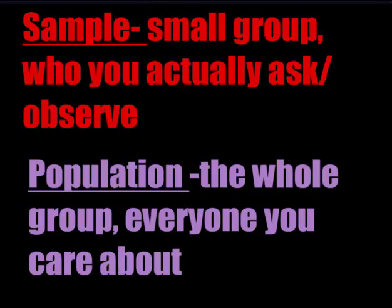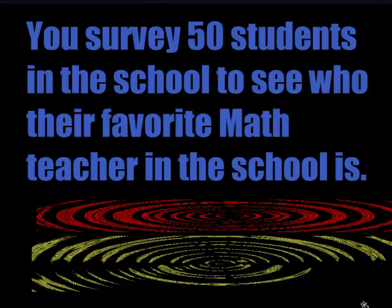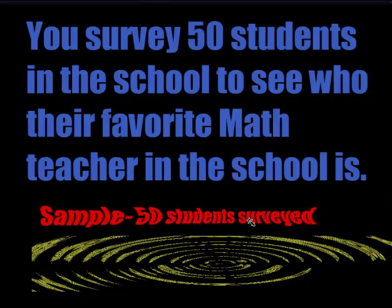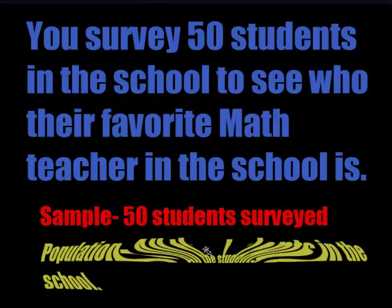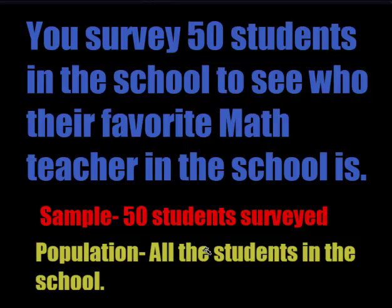In this next example, if you survey 50 students in the school to see who their favorite math teacher is, who would be the sample? The sample is who you ask, so it would be the 50 students you surveyed. Who do you apply this information to? You take the sample and apply it to the whole group — the population — which would be all the students in the school. The sample is 50 students; the population you care about is all the students in the school.